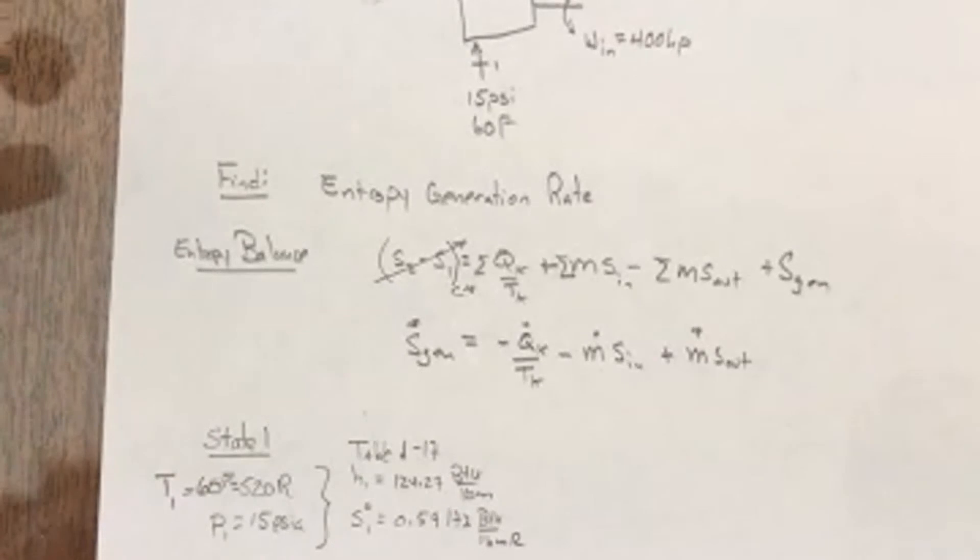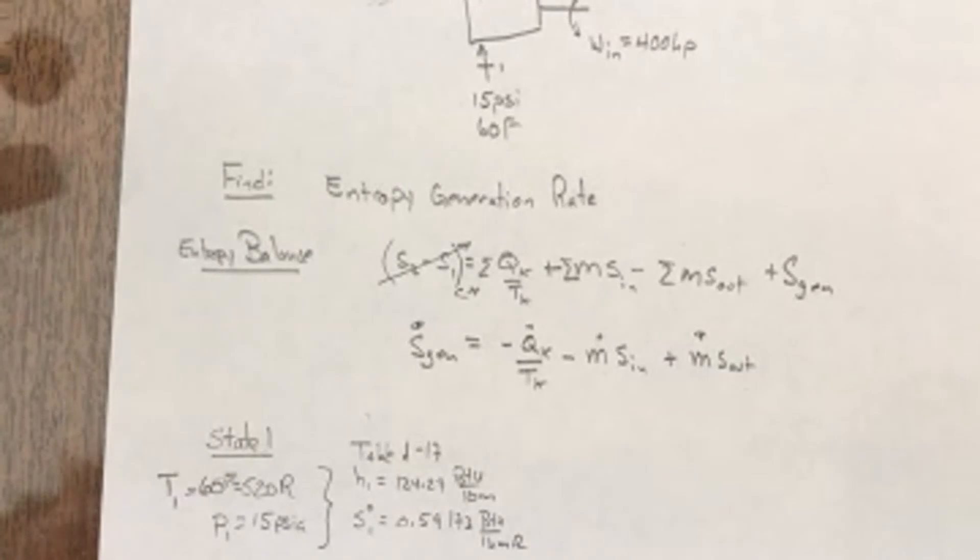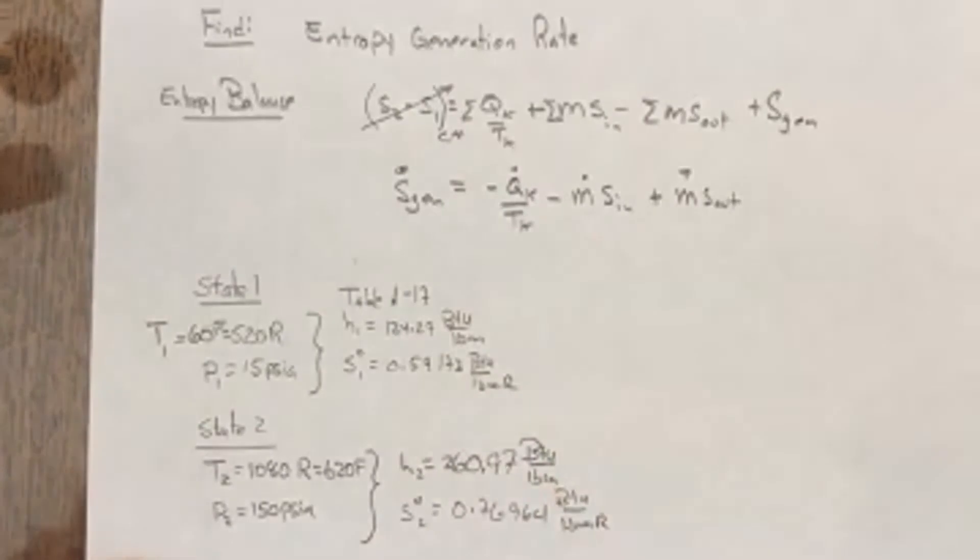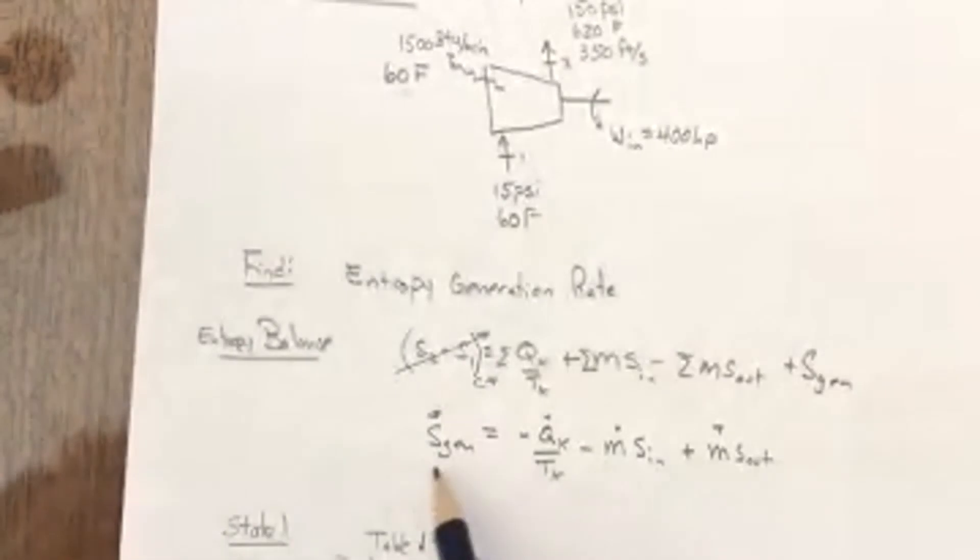What I don't know when I look at this equation is I don't know what M dot is. I know that M dot in is equal to M dot out. That's just a simple conservation of mass here, but I don't know what M dot is.